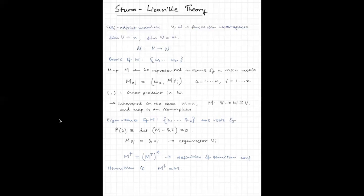Recall that an inner product is defined as <u, v> = u† · v. This means a matrix B is adjoint to matrix A if <Bu, v> = <u, Av>, which implies that B = A†. So a matrix is self-adjoint if A† = A.